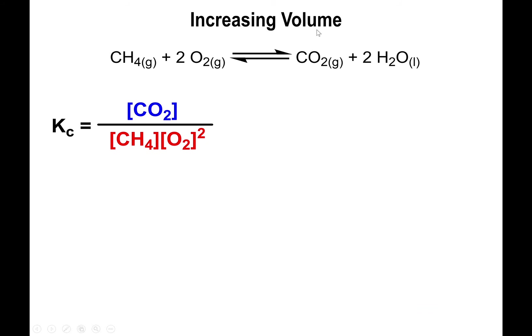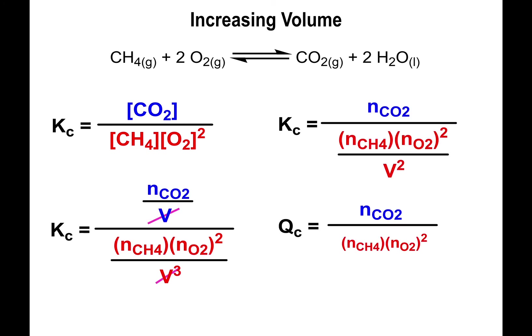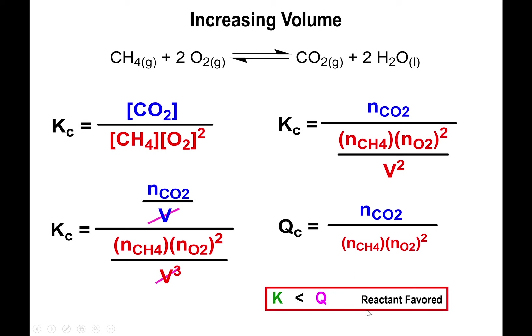The opposite is also true. If you increase the volume, the denominator becomes smaller, making the overall fraction larger, so Qc is now greater than K, and you shift to the reactant side. In other words, increasing the volume means more space is available, so the reaction shifts to maximize the number of molecules in that increased volume — the reactant side, which has more gaseous molecules. Reduce volume: shift to fewest gases. Increase volume: shift to most gases.